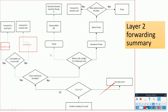If the L2 unknown unicast is set to flood in the bridge domain, whatever EPG is present under that bridge domain will get to know about this packet, and whoever has the destination MAC will receive it. In case of hardware proxy, the unknown L2 unicast is sent to the spine proxy. The spine proxy then checks if it knows the destination MAC — if yes, it sends the packet to the leaf; if no, it drops the packet.